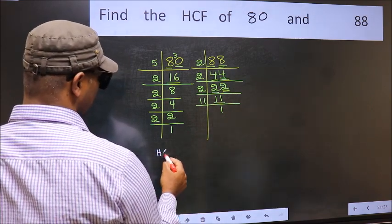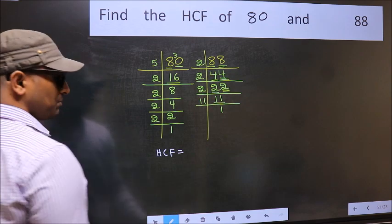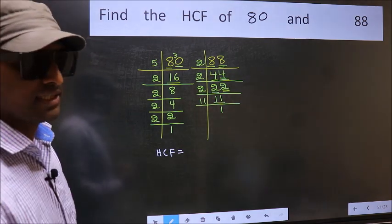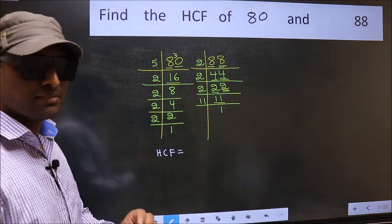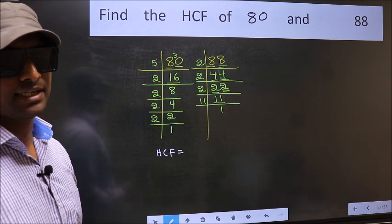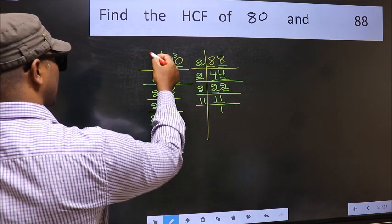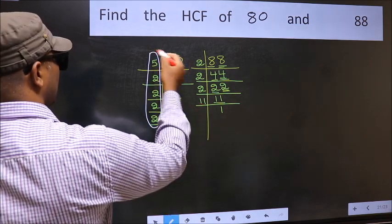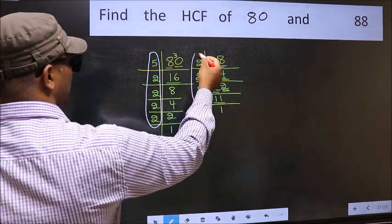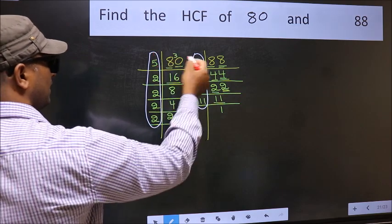Therefore our HCF is the product of the numbers which should be present in these 2 places, that is here and also here. Here and here.